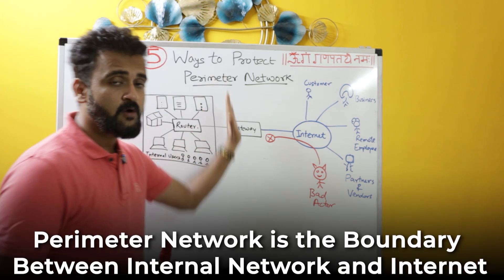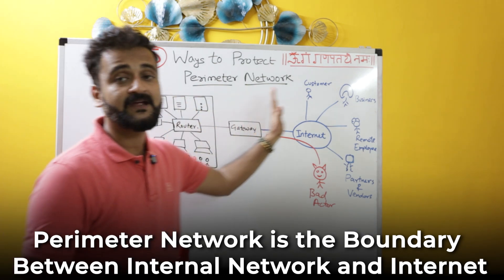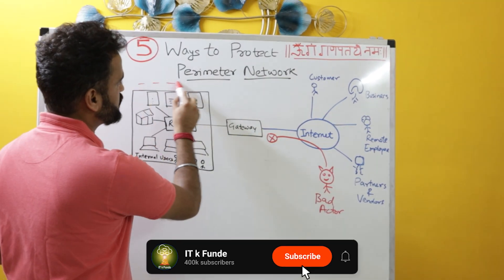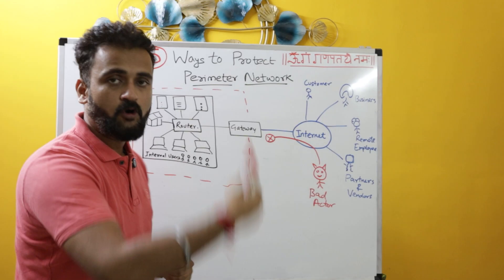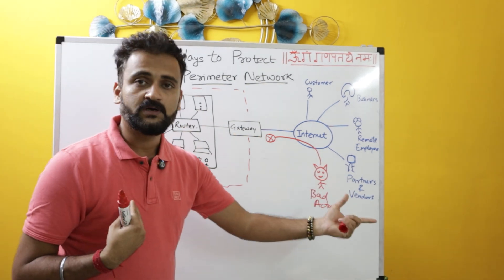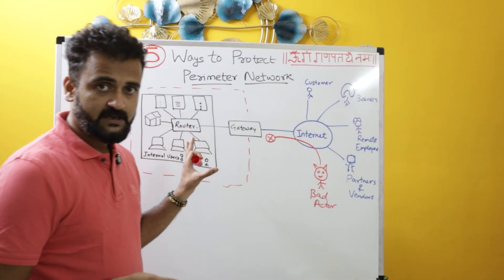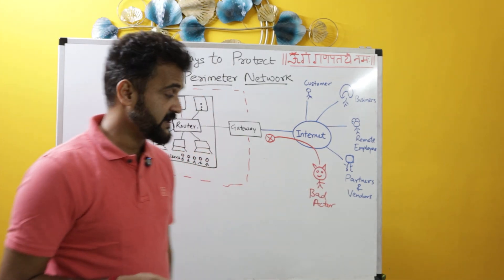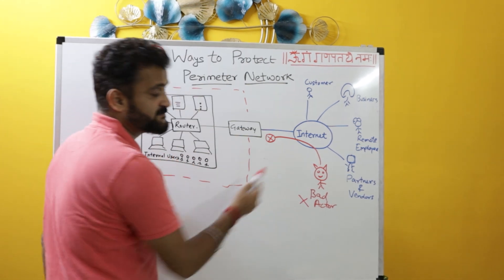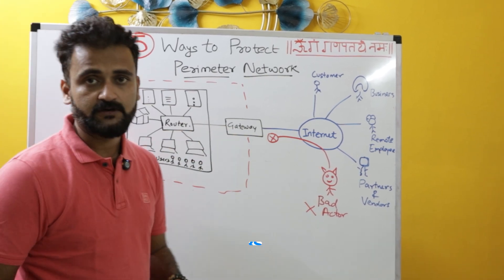The perimeter network is the boundary between your internal network — your private network — and the internet. So the perimeter network sits somewhere between us and the outside world. Not everyone in the outside world is a bad person. If you are a company, your customers, remote employees, business partners, and vendors all need to connect to you. The only people you don't want are the bad actors — the attackers who try to penetrate your perimeter network.